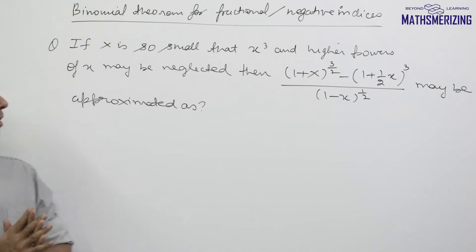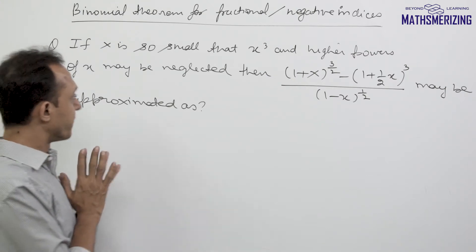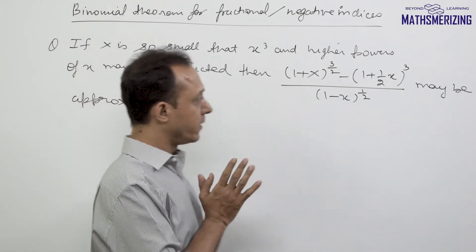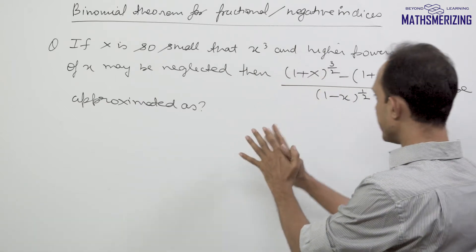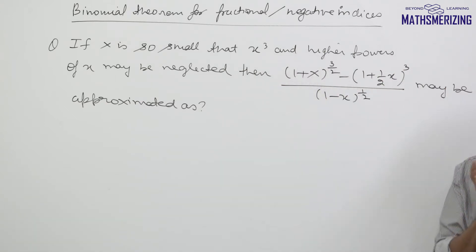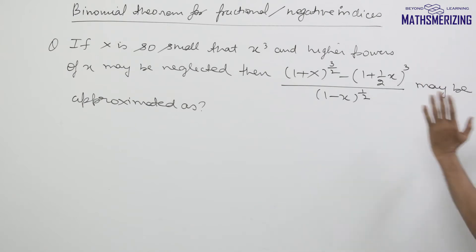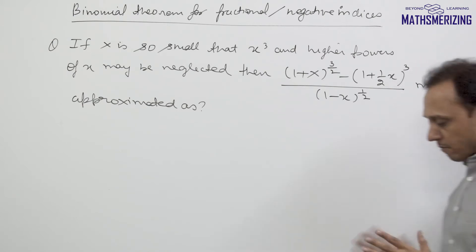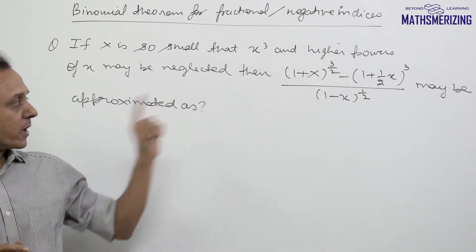Now, if x is so small that x cubed and higher powers of x may be neglected, then we need to find the approximate result of (1 + x)^(3/2) multiplied by (1 + x/2)^3, divided by (1 - x)^(1/2). You'll encounter such problems in physics.